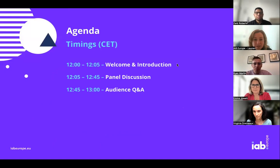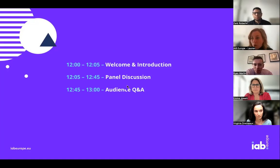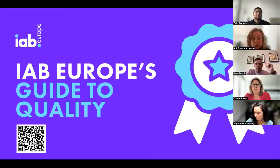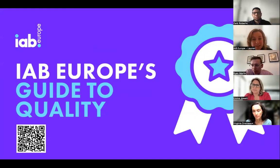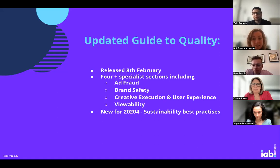We're looking to dive into the significance of quality in digital advertising. The agenda includes a welcome, a panel discussion around the guide that we produced, and then we'll finish with an audience Q&A. We released the guide back in February this year — it's an updated version, a comprehensive resource crafted by industry experts from our brand advertising committee, building upon the initial release in September 2021. The 2024 edition encompasses additional quality elements with a particular focus on sustainability best practices, and addresses crucial aspects such as viewability, brand safety, suitability, ad fraud, campaign creativity, user experience, and privacy.